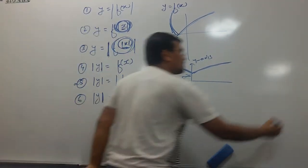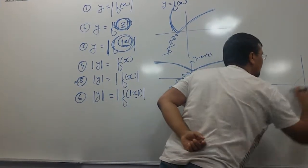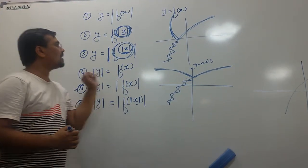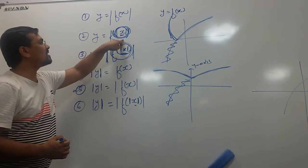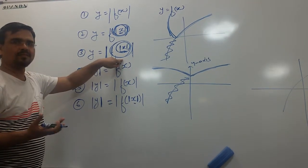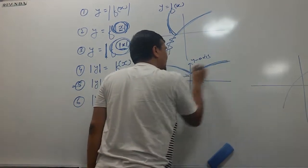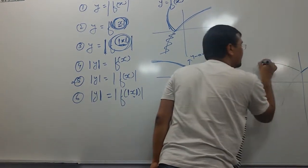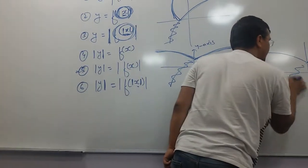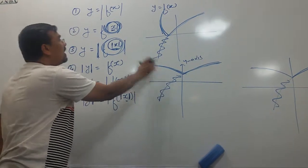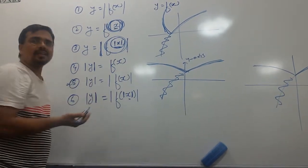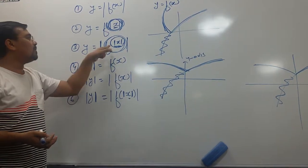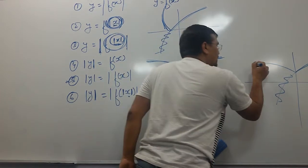How to draw number 3? If my graph is like this — number 3 is extension of number 2. In number 2, the function can be positive or negative. In number 3, the function should always be positive. In this particular graph, my function is already positive — it is never negative. So the third graph would also look the same as number 2, because y is already always positive. Our final graph is this.